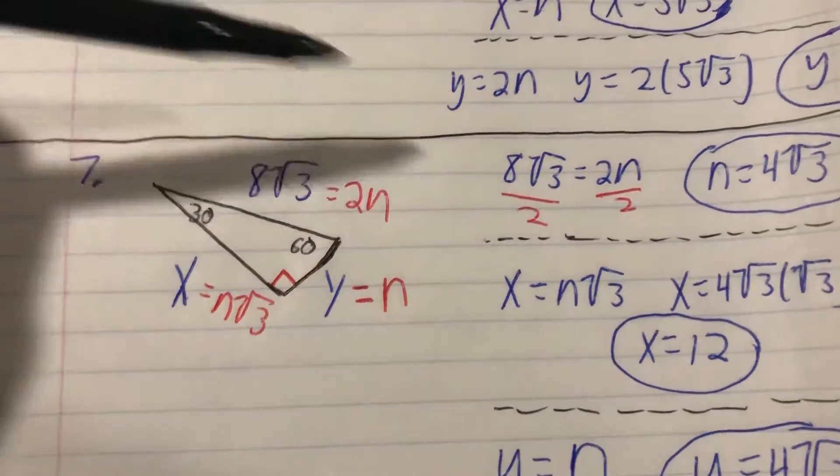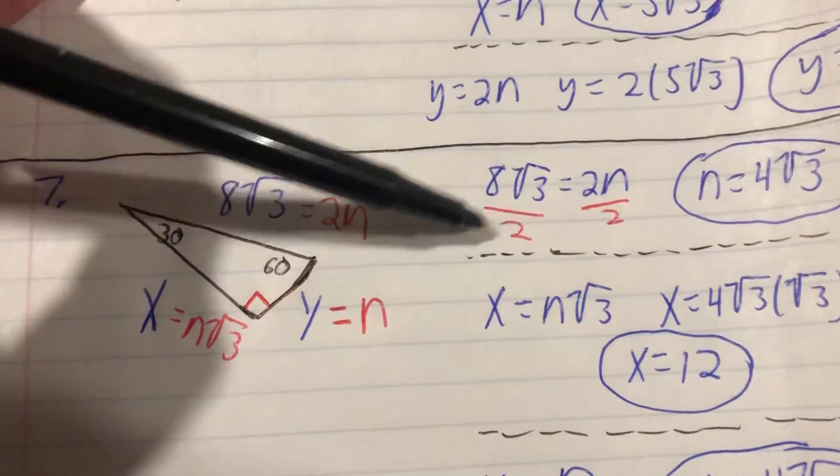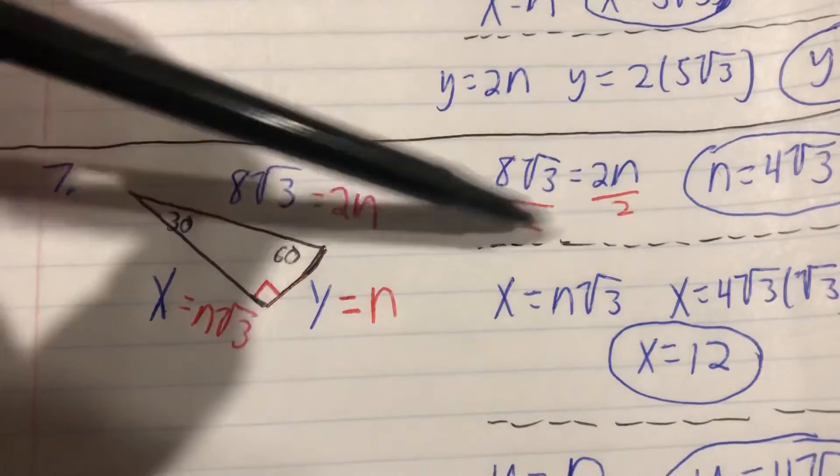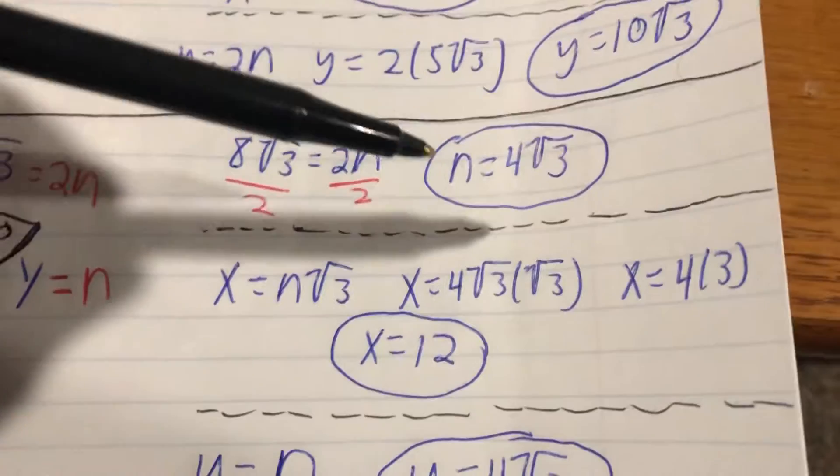We divide by 2 on each side—cancels on the right. On the left hand side we can simplify that fraction, we get n equals 4√3.